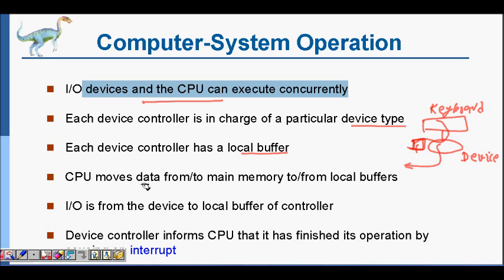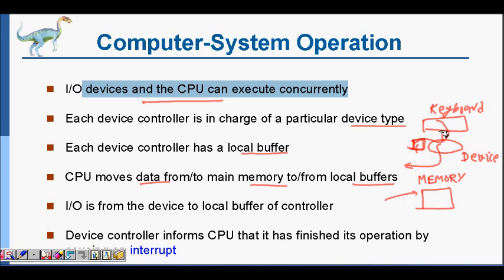The CPU moves data from main memory to local buffers and vice versa. The memory or RAM is there, and the CPU can transfer data from main memory to the buffers of the keyboard or other devices, and it can also copy from those buffers back to main memory. For example, if you press the letters A, I, O, they will first be stored in the buffer, then the CPU will copy them from the buffer to memory. Input/output is from the device to the local buffer of the controller.